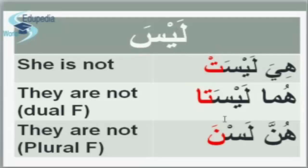They are not — plural feminine. 'They are' is هُنَّ, and they are not is هُنَّ لَسْنَ. If you compare it with لَيْسَ, there is no يَا, there is سُكُون on top of سَ, and you add نَ at the end. هُنَّ لَسْنَ — they are not, plural feminine. Again: هِيَ لَيْسَتْ — she is not; هُمَا لَيْسَتَا — they are not, dual feminine; هُنَّ لَسْنَ — they are not, plural feminine.